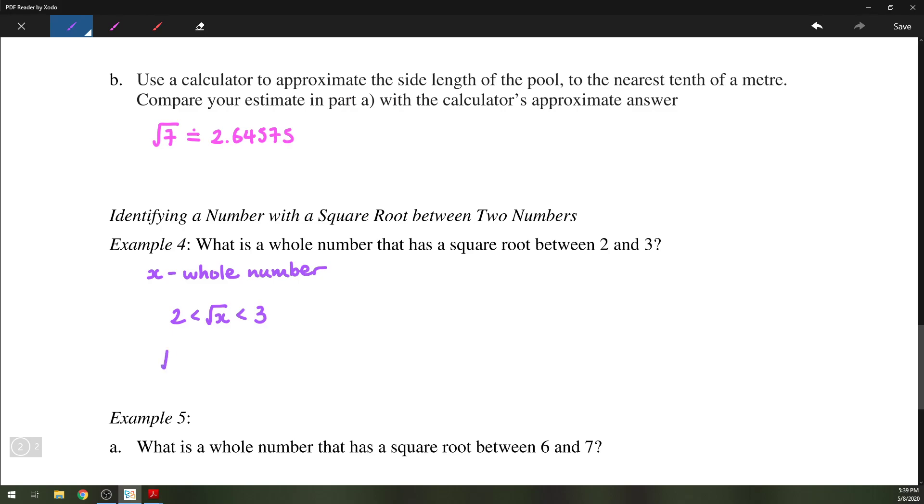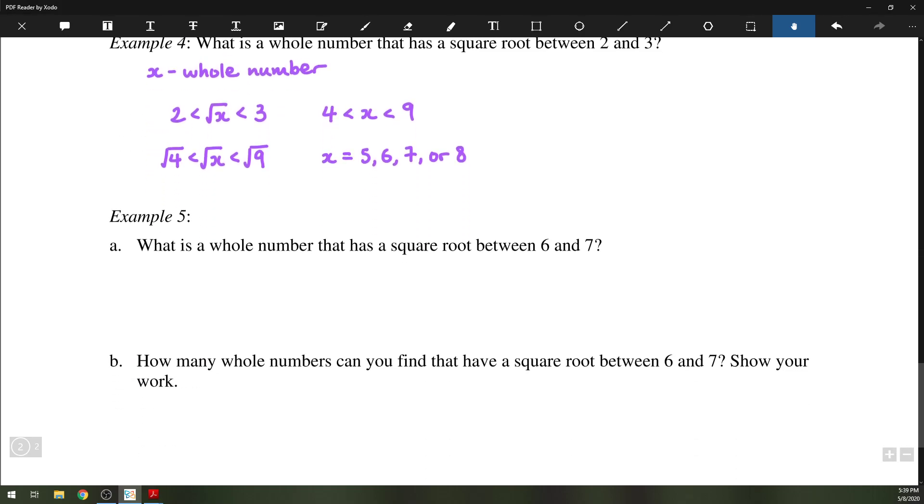So we know, based on this, that 4 is less than x is less than 9. So x could be any whole number that's between 4 and 9. X could be 5, 6, 7, or 8. So that's kind of the process.